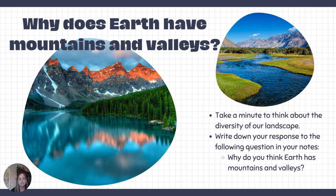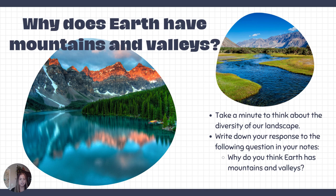The first thing we need to think about is: why does Earth have mountains and valleys? If you live in the Central Valley like I do, we live in this big, vast valley, and there are mountains on either side of us. How did those get there? Why do we see those mountains next to our large valley? Why isn't it just one big valley? We're going to start answering those questions as we go through these lectures, so that you better understand how our Earth is shaped.